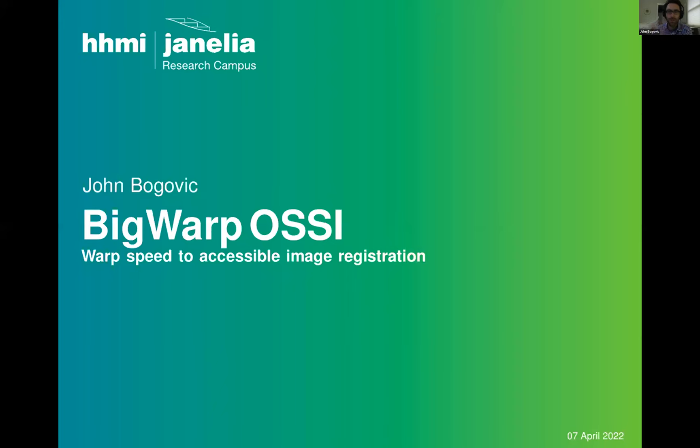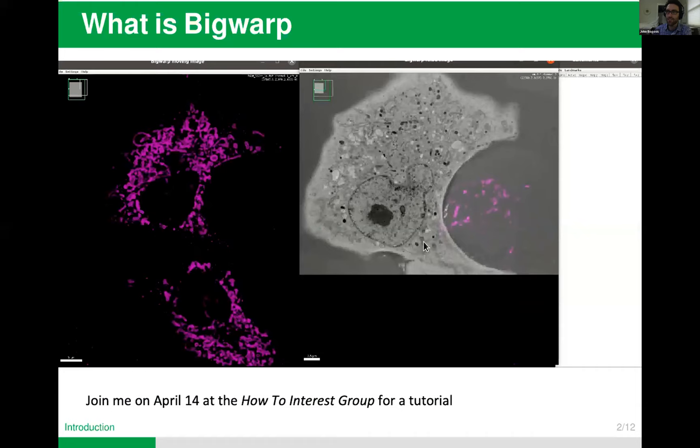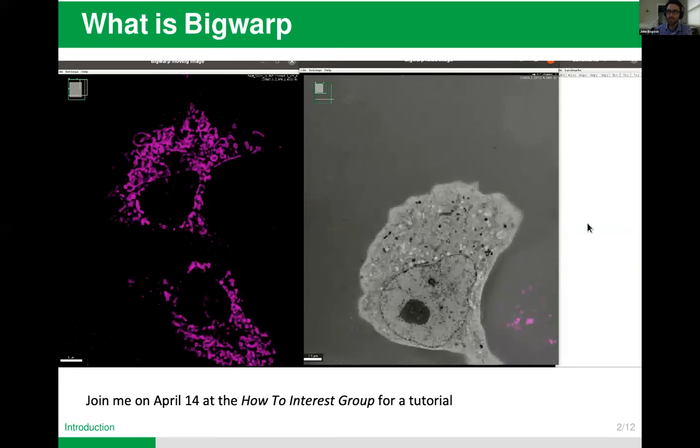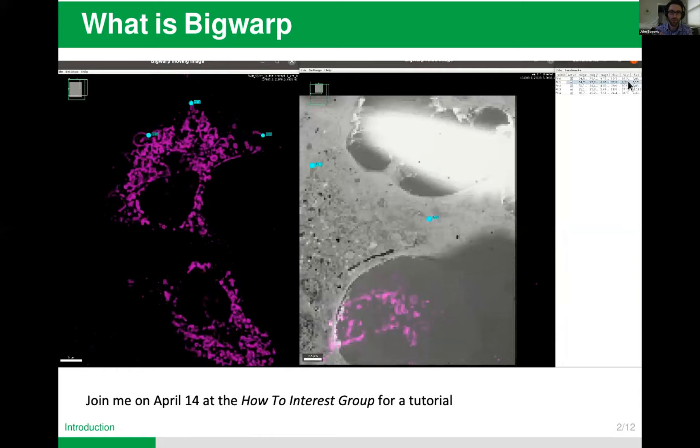I'm part of the Saalfeld Lab, and back in about 2015, along with Stefan, I created Big Warp and have been developing and maintaining it ever since. It's a Fiji plugin for interactive landmark-based deformable registration of volumes, and these can be huge volumes since Big Warp is built upon Big Data Viewer and ImageLib 2.